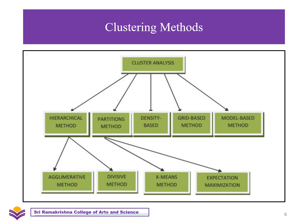The grid-based method works on the object space by dividing the data into a grid, which is divided based on characteristics of the data. By using this method, non-numeric data is easy to manage and data order does not affect the partitioning of the grid. The model-based method uses a hypothesized model based on probability distribution. By clustering the density function, this method locates the clusters and reflects the spatial distributions of data points.